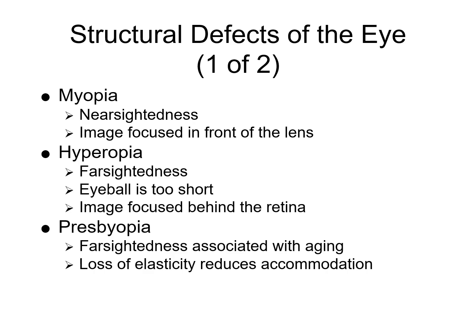Myopia is nearsightedness — you can see nearby objects clearly but have difficulty seeing objects farther away. For example, if you're nearsighted, you may not be able to make out highway signs until they're just a few feet away, or you may need to sit at the front of the classroom to see the board. Hyperopia, or farsightedness, is when you see things far away better than things that are close up, causing general eye discomfort like headaches with close-up tasks such as reading, writing, computer work, or drawing.